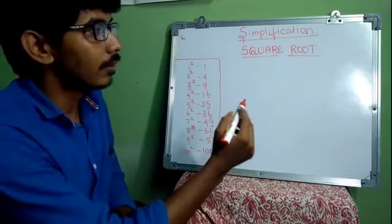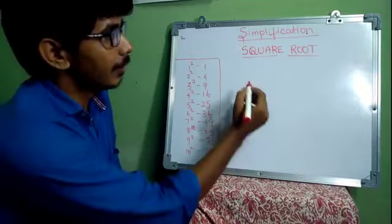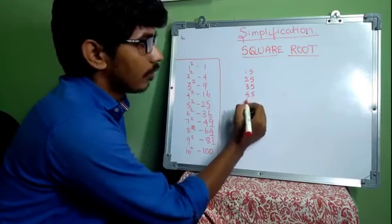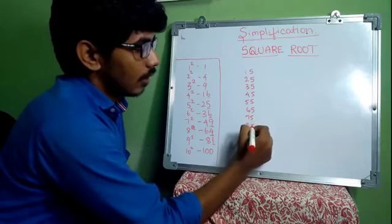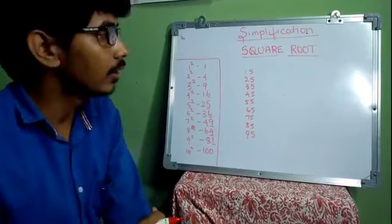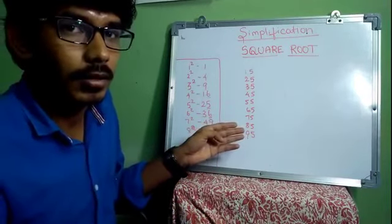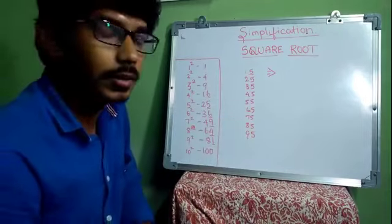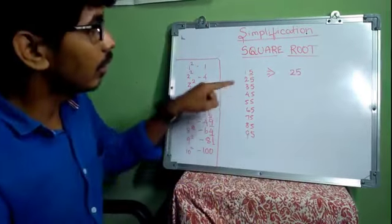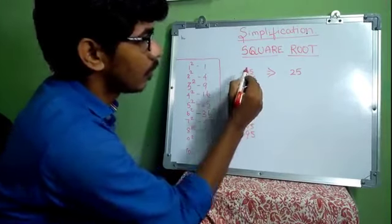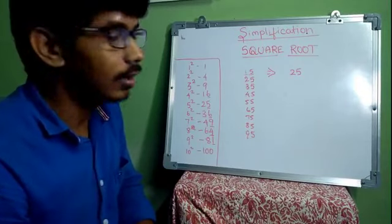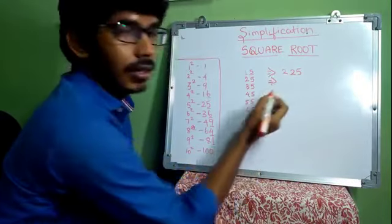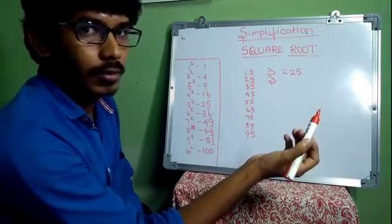Here is an easy method. For numbers ending in 5 — like 15, 25, 35, 45, 55, 65, 75, 85, 95 — you can easily find the square root. The unit digit is always 5. For example, 5² = 25. In the tens digit you have 1, and the next number to 1 is 2, so 1 × 2 = 2. That gives you 25.